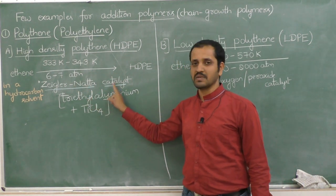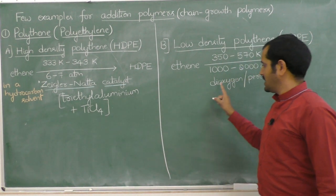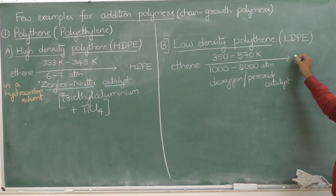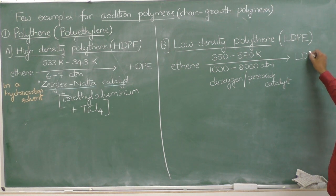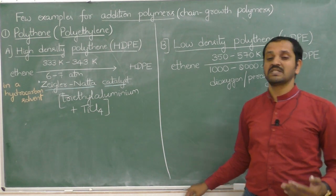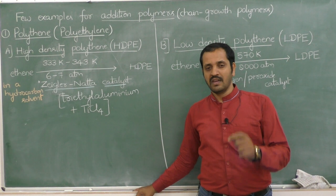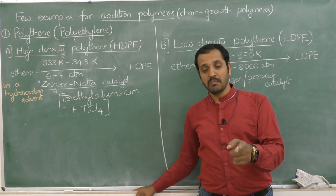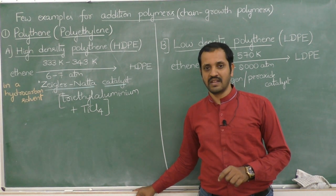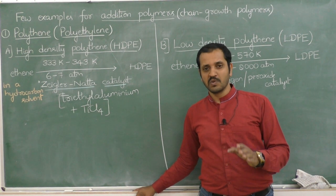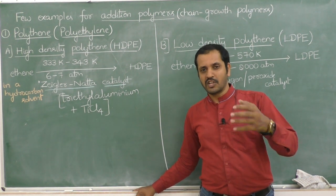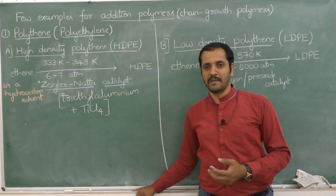Note: Ziegler-Natta catalyst is used in the preparation of HDPE, whereas dioxygen or peroxide is used as catalyst in the preparation of LDPE. LDPE is chemically inert, tough but flexible, and a poor conductor of electricity. It is used for making insulation for electric cables, toys, squeezing bottles, etc.